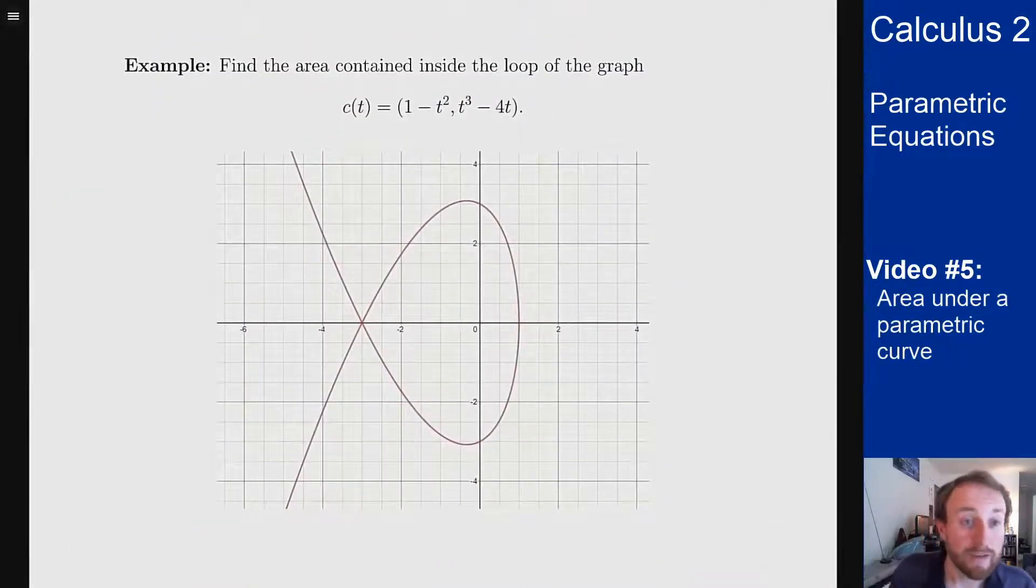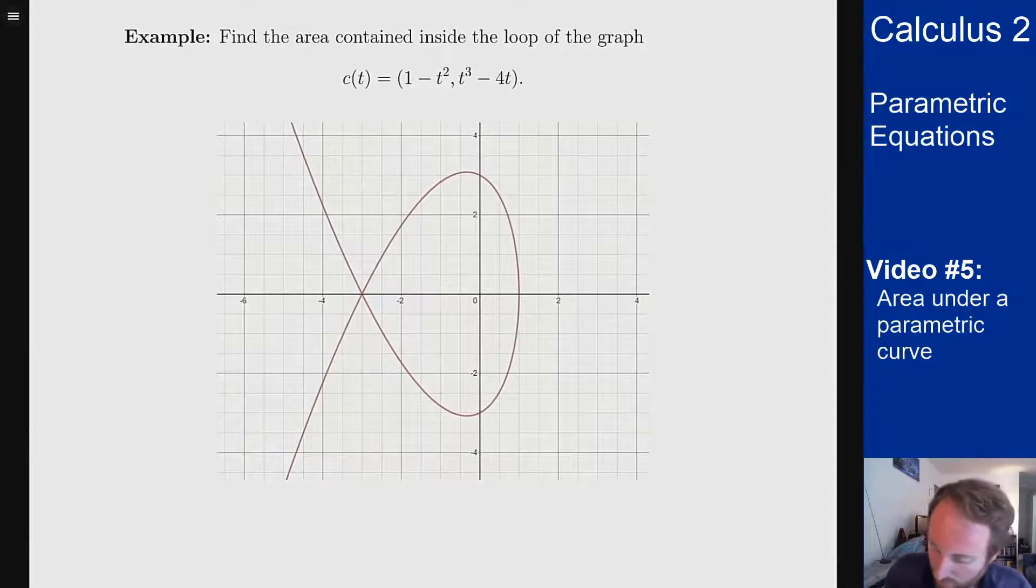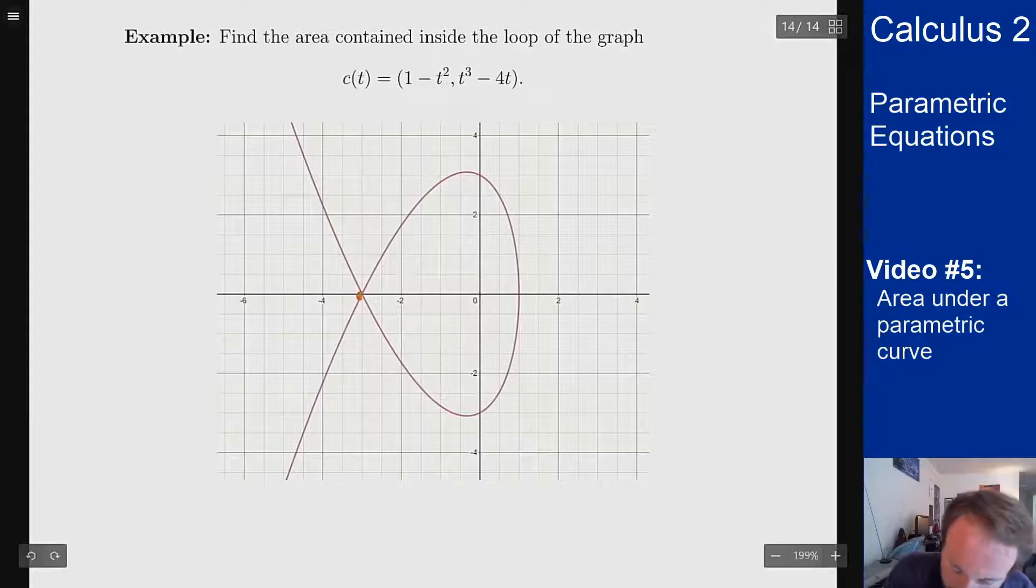Like in this example: Find the area contained inside the loop of the graph c of t equals 1 minus t squared, t cubed minus 4t. So I want the area that's inside this loop right here. How am I going to find that? Well I need to find first where this intersection point is and then what I can use to find the area.